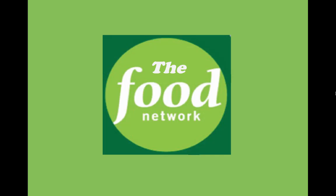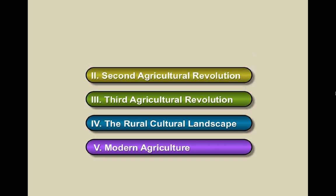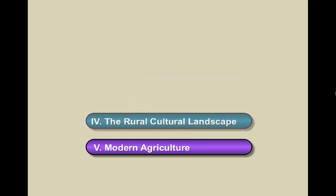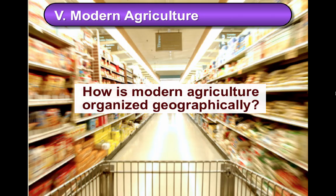How are you doing? Welcome to the Food Network Part 6. In this video, we're going to start looking at the fifth part of our investigation into modern agriculture, and we ask: how is modern agriculture organized geographically?